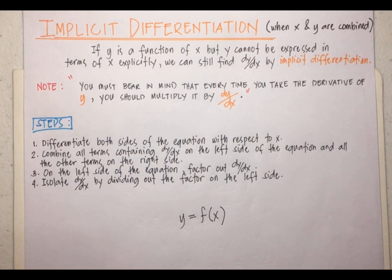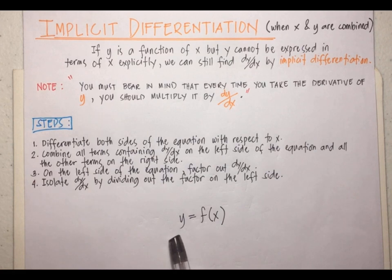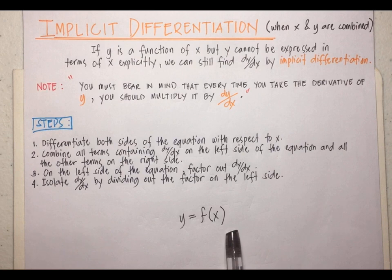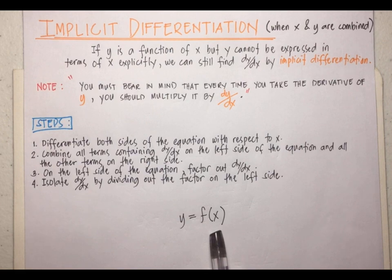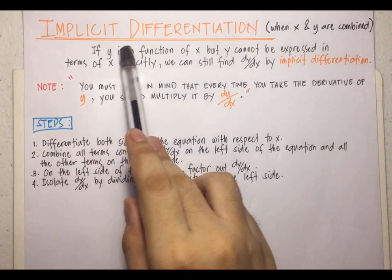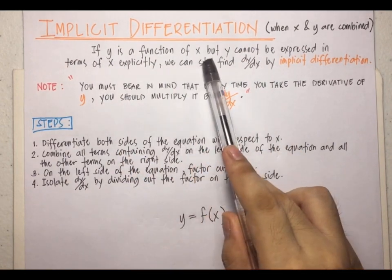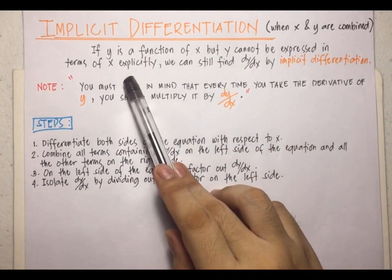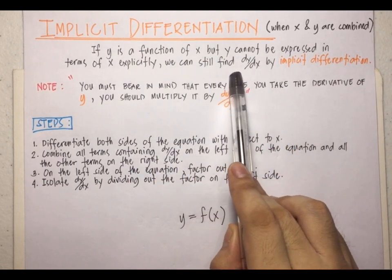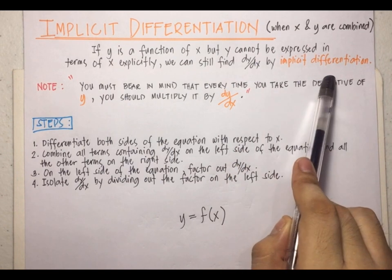We're going to see what happens when x and y are combined. Every problem we have seen so far has been y equals something in terms of x. What we're going to do now is see a function where x and y are mixed. When x and y are combined, we're going to do implicit differentiation. If y is a function of x but y cannot be expressed in terms of x explicitly, we can still find dy/dx by implicit differentiation.